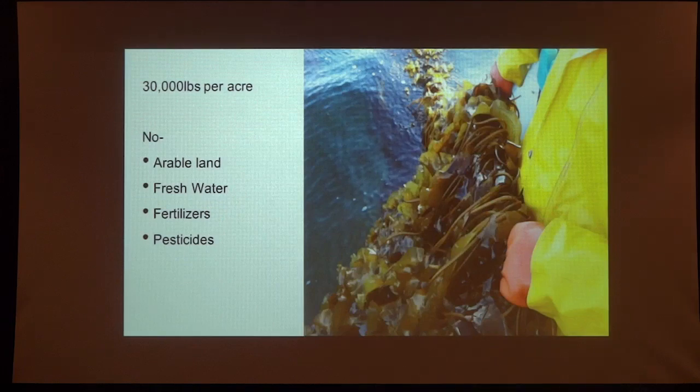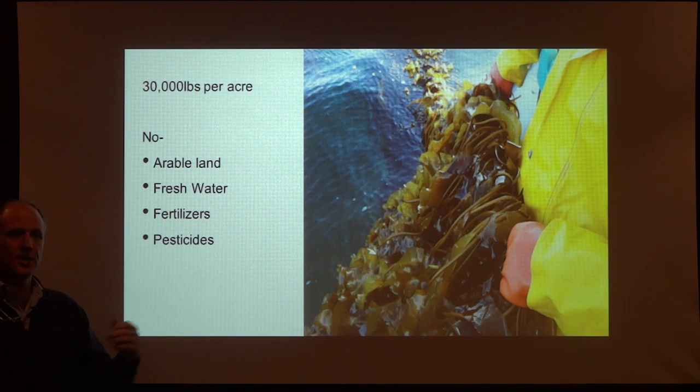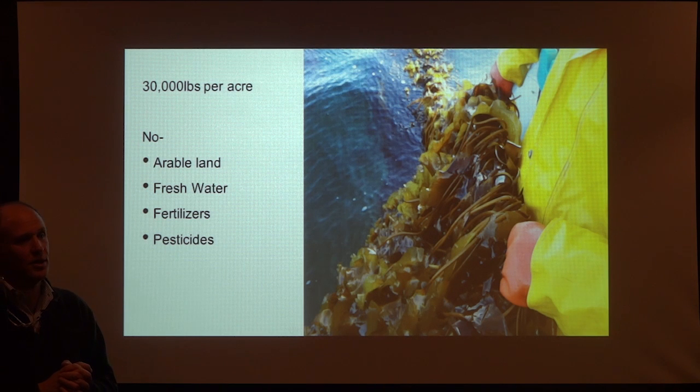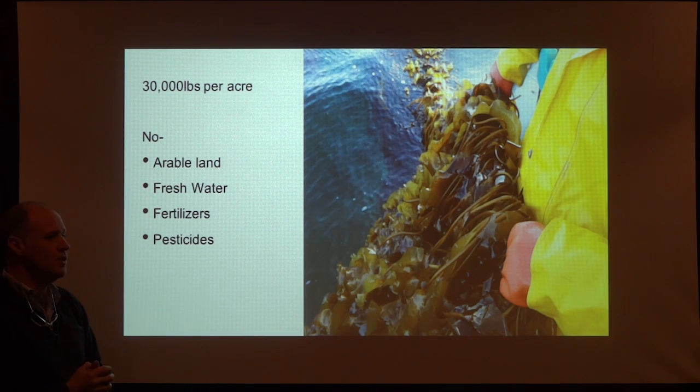We sold our mussel farm to Matt Moretti — a young kid at 26 who's done a fabulous job, a great example of the next generation. We seeded on January 1st, and by April 1st we're ready to harvest. The kelp was microscopic when it went down, and 90 days later those fronds are up to 20 feet in length. We generate about 30,000 pounds of food per acre — about what you get from a potato field — but without any arable land, fresh water, fertilizers, or pesticides. The only input is labor.